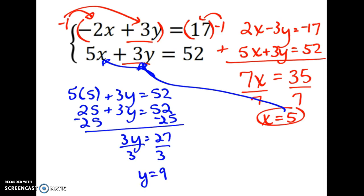So my solution appears to be x is 5, y is 9 as an ordered pair. And if I check it in both equations, I'll give you that task. But it does work out perfectly. Thank you, everybody.